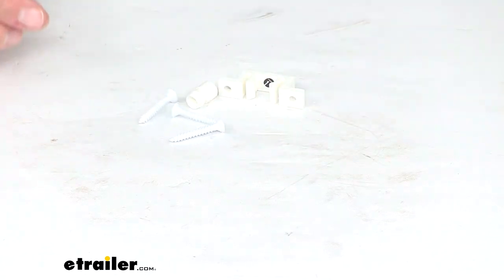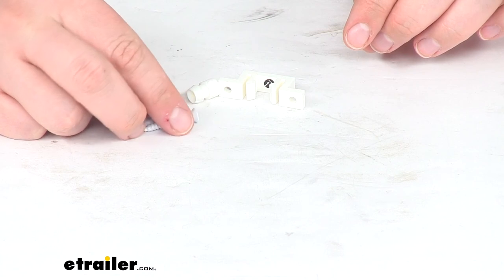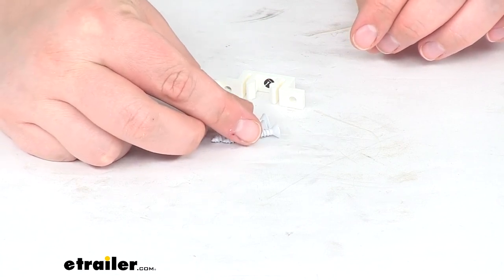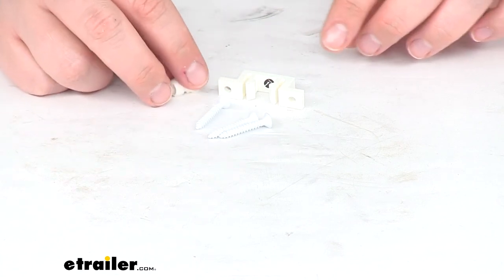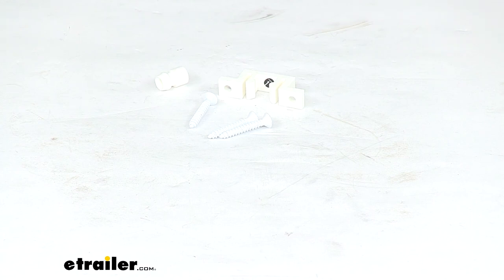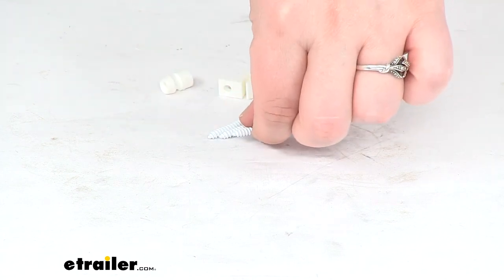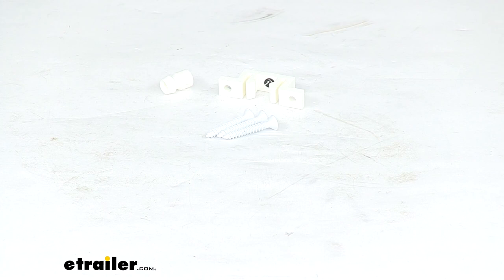That's pretty much all that there is to it for our replacement RV door or folding door or closet door latch plate. If you need any other accessories or hardware for your RV, you can find a lot of options here at eTrailer.com to get you back out on the road and enjoying your vacation. Thanks for watching and we'll see you next time.